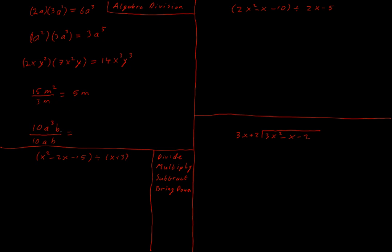Here I have 10a cubed b divided by 10ab — 10 multiplied by a multiplied by b. So 10 divided by 10: any number divided by itself is just 1. I have a cubed divided by a to the power of 1 — 3 a's multiplied together, dividing by 1a, leaves me with 2 a's. And b divided by b: b is just some number, so some number divided by itself is 1. So I'm left with 1 times a squared, which I write as just a squared.